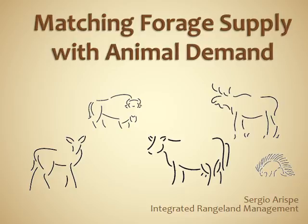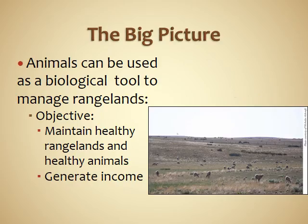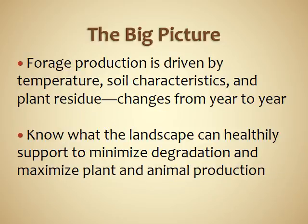In this lecture we're going to discuss matching forage supply with animal demand. The big picture is that animals can be used as a biological tool to manage rangelands. Ultimately the main objective is to maintain healthy rangelands and healthy animals so the livestock producer can generate income.